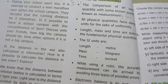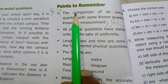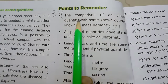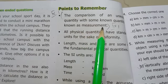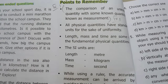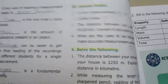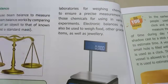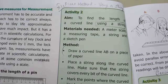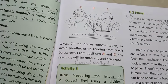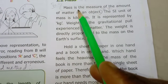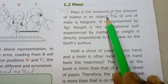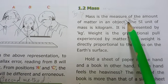Moving to Roman numeral IX: Answer briefly. First one — define measurement. Turn to page 10, points to remember: the comparison of an unknown quantity with some known quantity is known as measurement. Second one — define mass. Turn to page 7: mass is the measure of the amount of matter in an object.